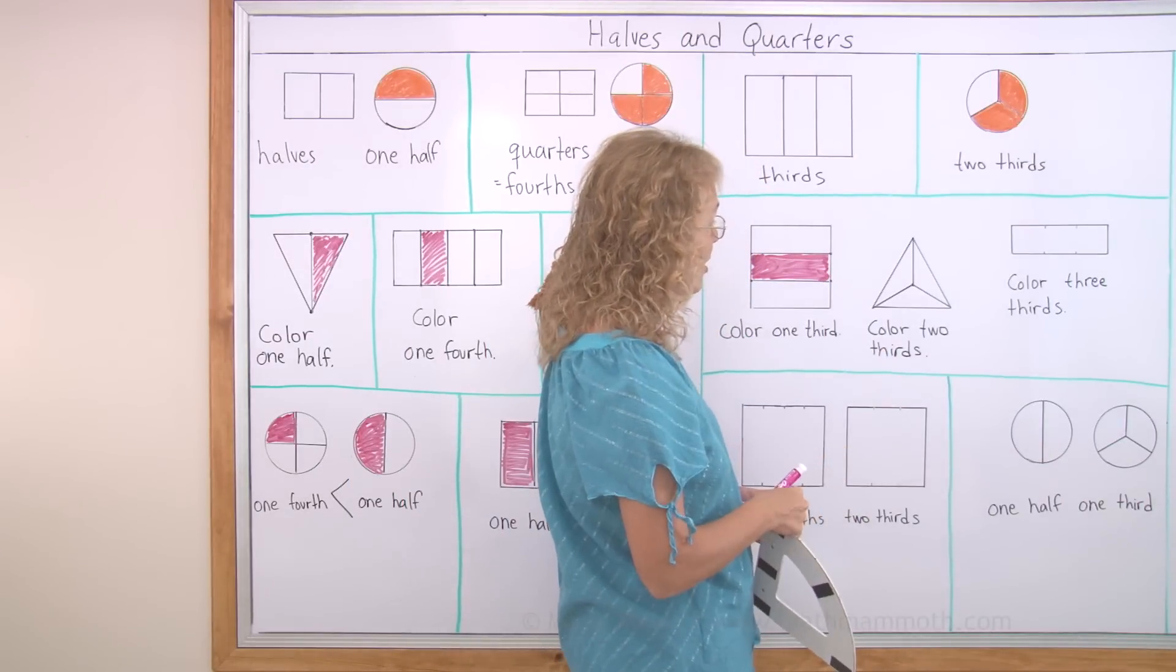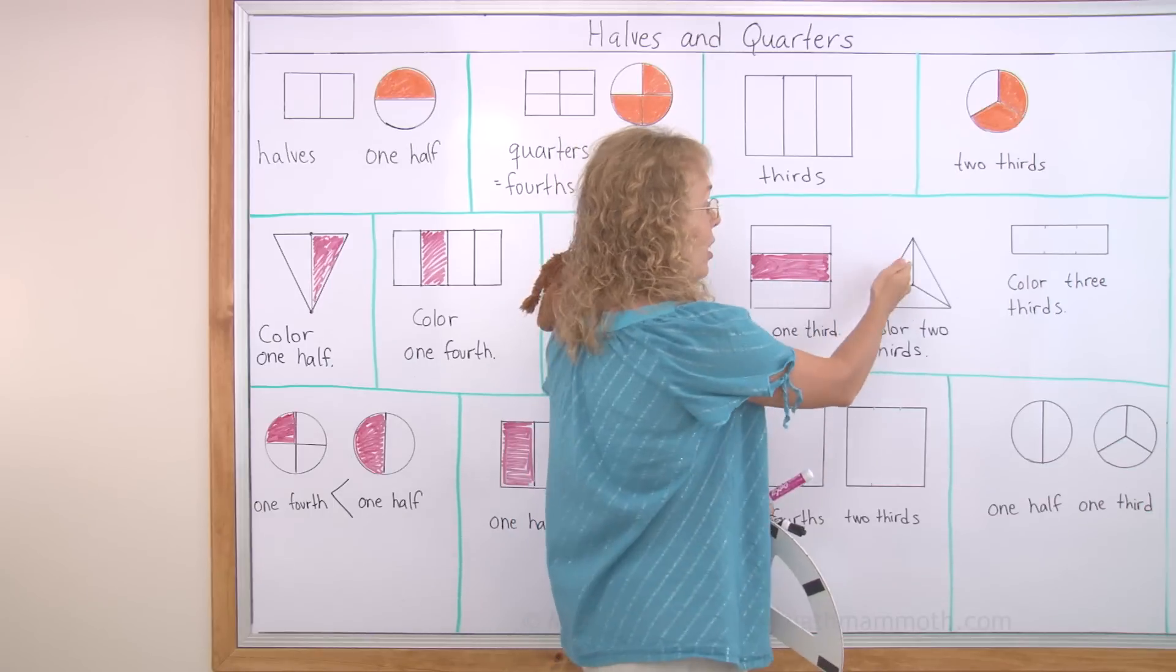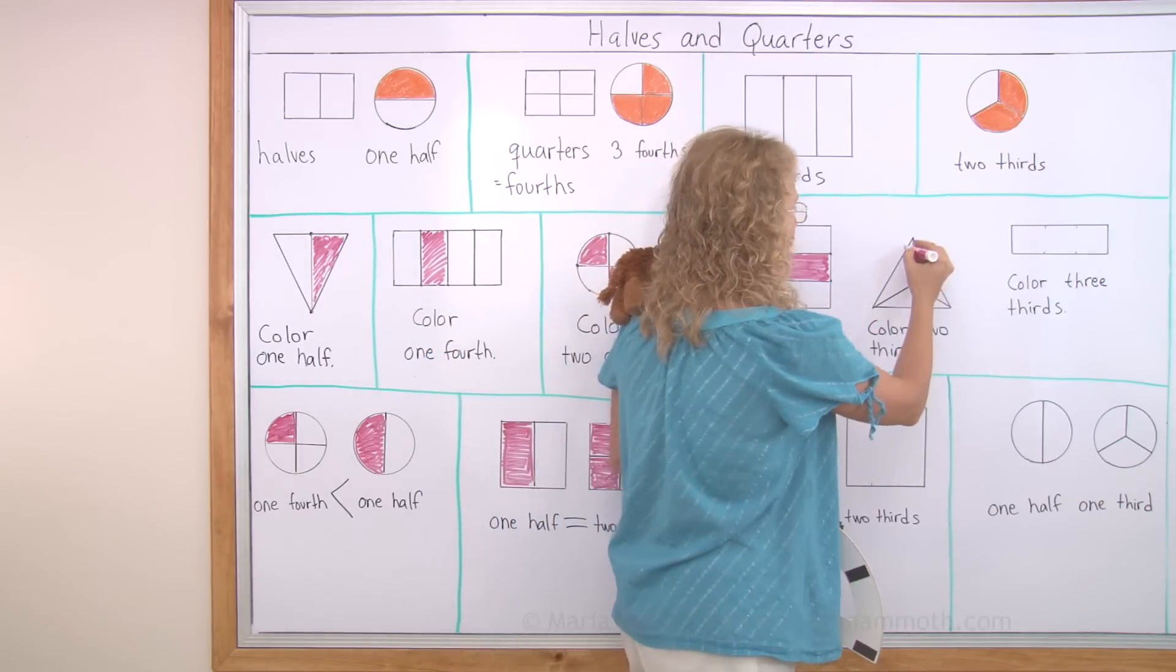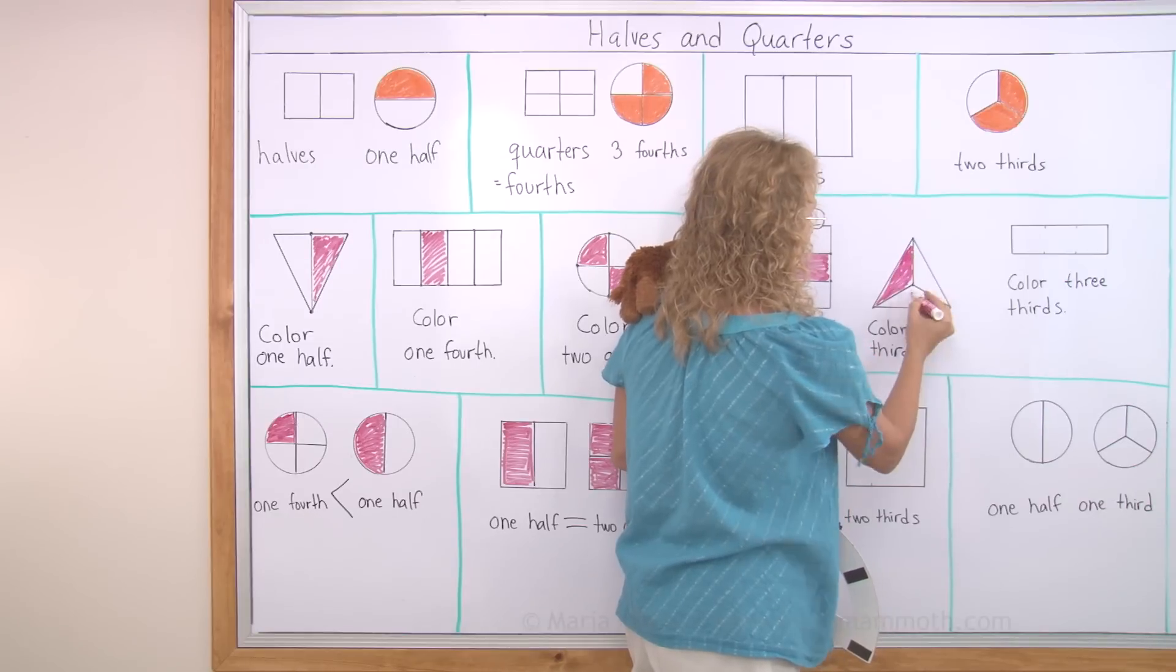Color two thirds. This is an interesting looking triangle, but it's divided into three parts and the parts are equal. They are the same shape. So I'll color two thirds. That one and that one.